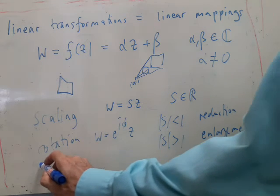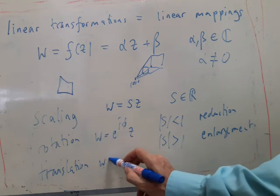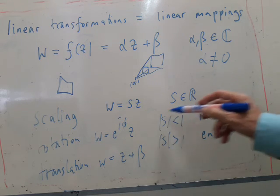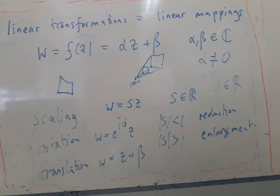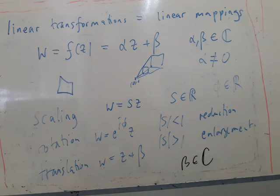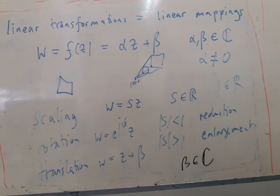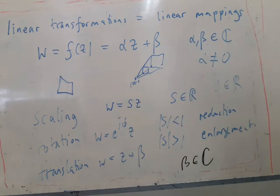And then we've got a translation, which is just shifting the object. So phi is any real number, but normally we would choose it to be between zero and two pi. And beta can be any complex number. It would translate the object by the real part of beta in the x direction and the imaginary part of beta in the y direction. So you can combine all of these three to give you some general linear transformation.